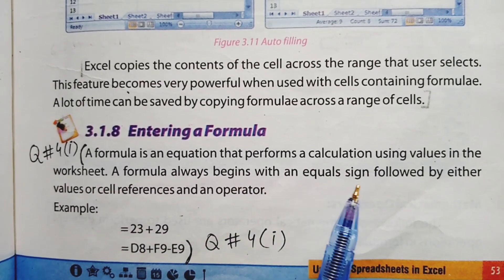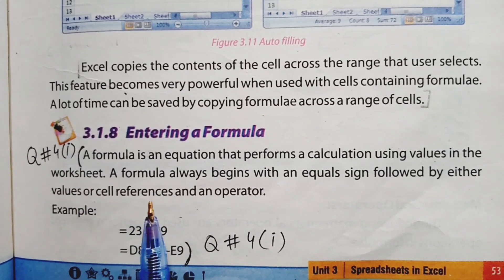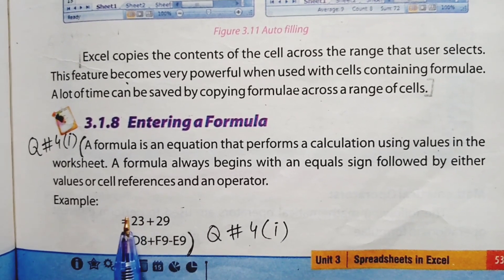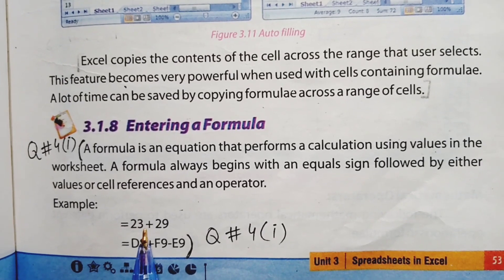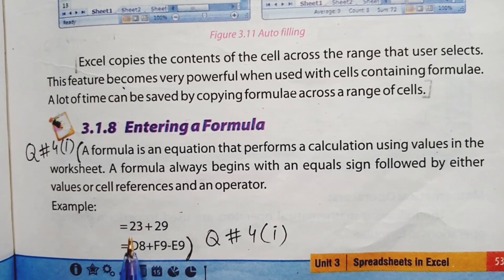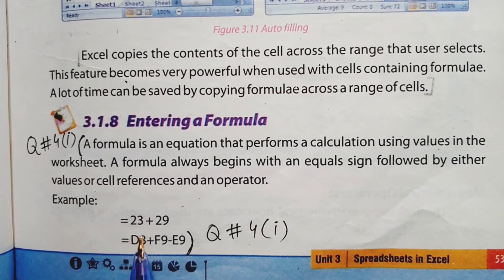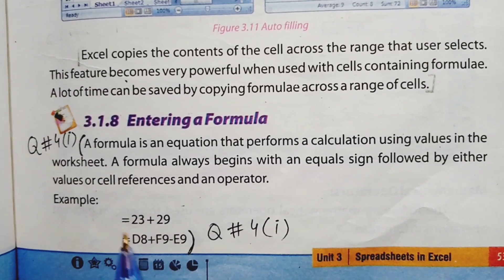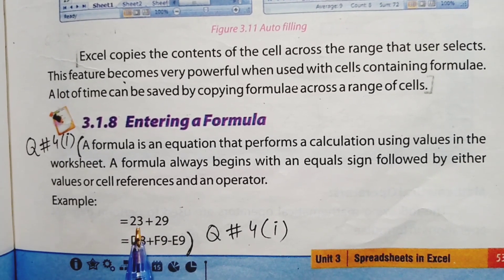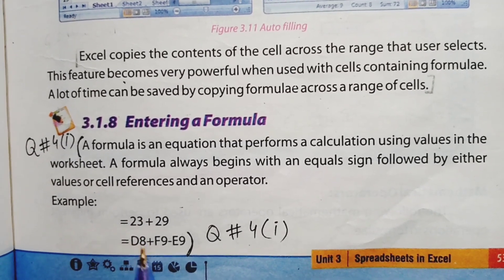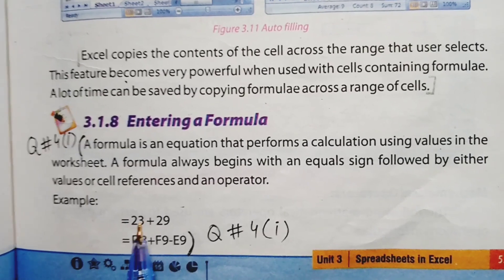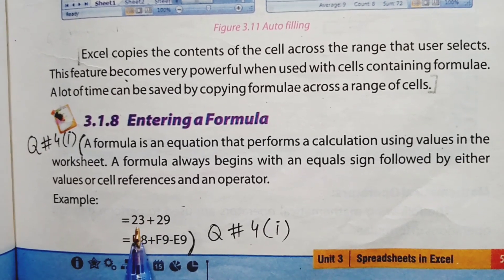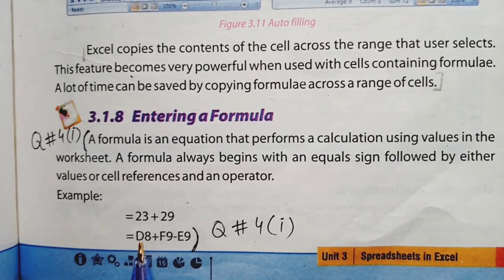Now we will discuss some rules about how a formula is entered. A formula always begins with an equal sign, followed by either values or cell references and an operator. Formula always starts with an equal sign. After the equal sign, values or cell references are entered. In one formula you can use direct data values, and in another you can use cell references. After the values or cell references, an operator is used.